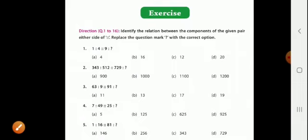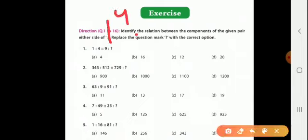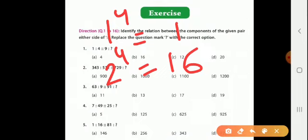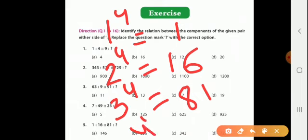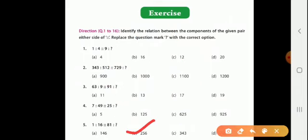Question five: One is to sixteen as eighty-one is to what? One to the power four equals one. Next number is two, so two to the power four: 2×2×2×2 equals sixteen. Next natural number is three, so three to the power four: 3×3×3×3 equals 81. So next it will be four to the power four: 4×4×4×4 equals 256. The right answer is 256.